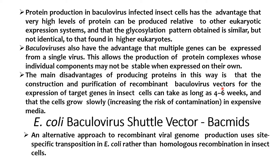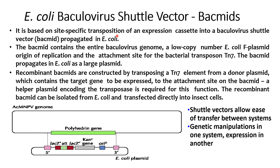We can also use the E. coli baculovirus shuttle vector called the bacmid. The main disadvantage of producing protein in this way is that the construction and purification of recombinant baculovirus for the expression of target genes in insect cells can take as long as four to six weeks, and the cells grow slowly, increasing the risk of contamination in expensive media. An alternative approach is recombinant viral genome production via site-specific transposition in E. coli rather than homologous recombination in insect cells.